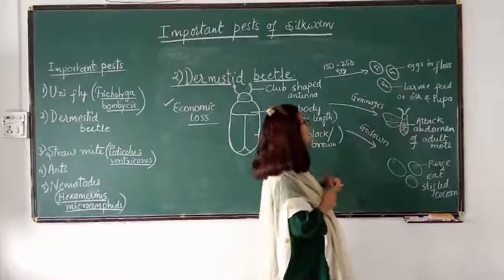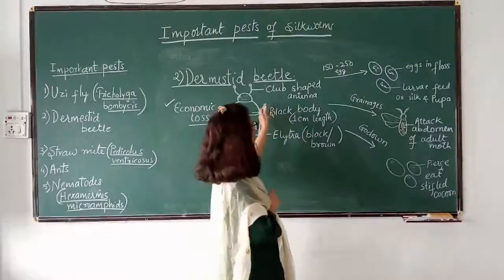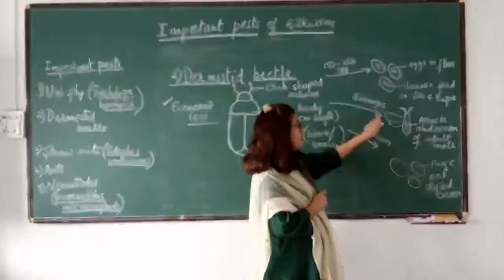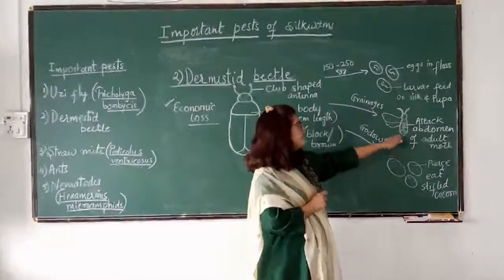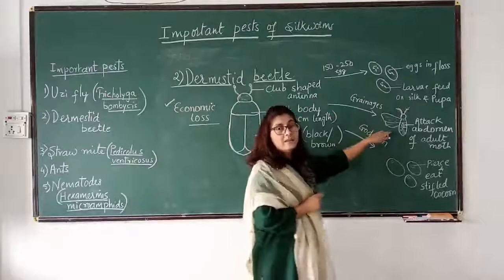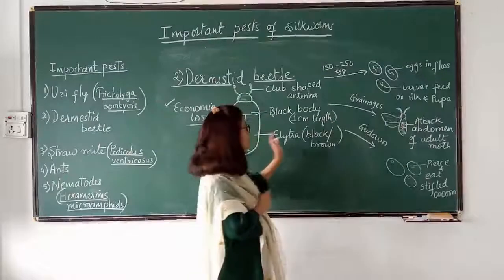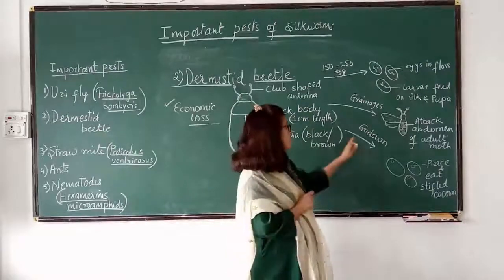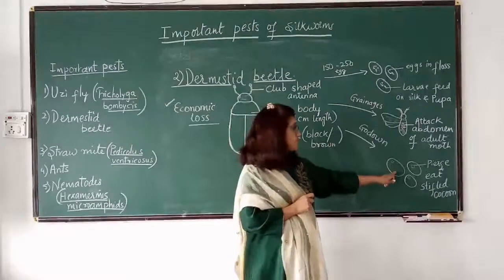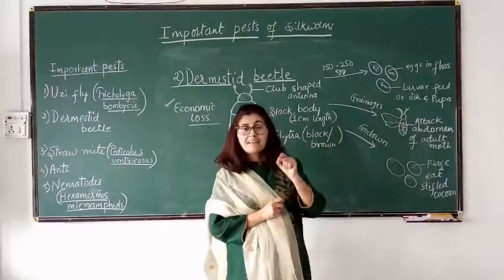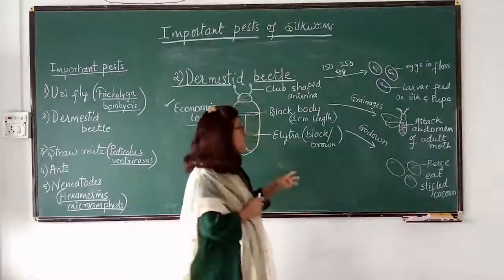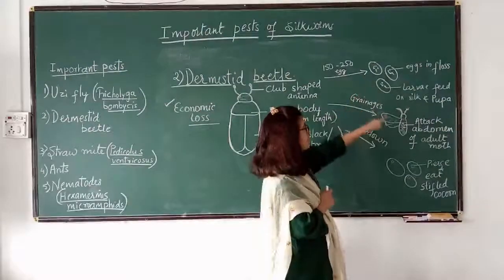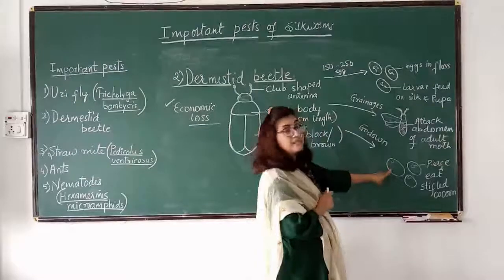The second way it is destructive is that adult beetles enter the grainages and attack the abdomen of the adult silkmoths. The third method is that beetles are attracted to the smell of stifled cocoons stored in go-downs. They enter the go-down, pierce the cocoon, and eat the larva inside. So domestic beetles destroy the sericulture industry in three ways: they destroy cocoons by feeding on silk, they destroy adult moths, and they create pierced cocoons.